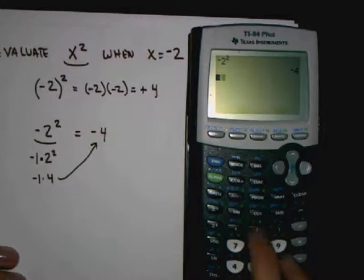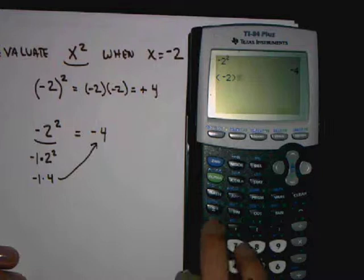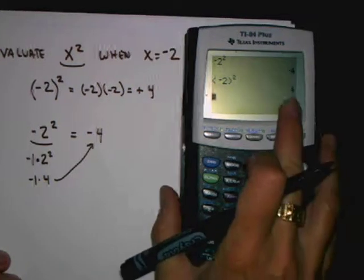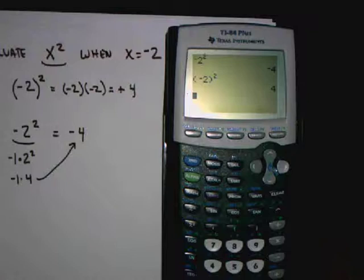To do this correctly on our calculator, we can use the parentheses again. We can open some parentheses, put negative 2 in there, and then take that whole expression and square it. And now we get positive 4, which is the correct answer.